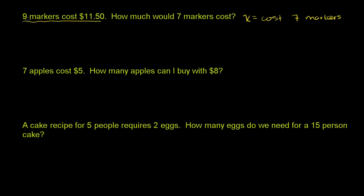So you could say that the ratio of nine markers to the cost of nine markers — nine to $11.50 — should be equal to the ratio of our new number of markers, seven, to whatever the cost of the seven markers is, to x. This is a completely valid proportion. The ratio of nine markers to the cost of nine markers is equal to seven markers to the cost of seven markers, and then you could solve this to figure out how much those seven markers would cost.